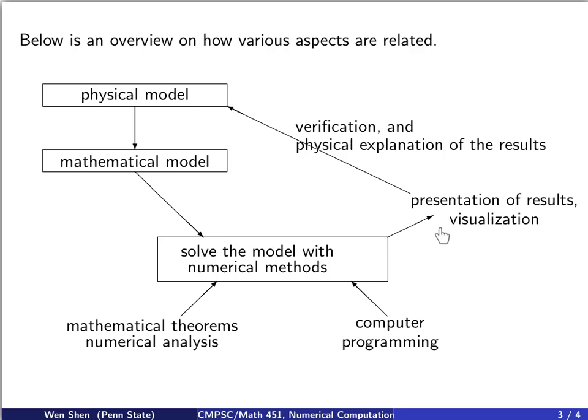And maybe, after looking at the result, you say, I forgot something. One aspect I neglected in my model, maybe that's why my result is not so good. So I might go back to the physical model, and take that aspect into consideration, and design a new mathematical model, and you can iterate until you get a satisfactory result.